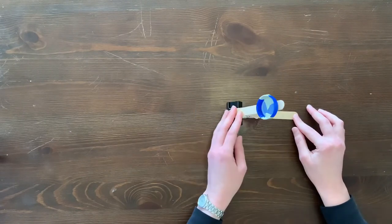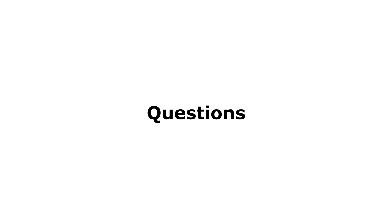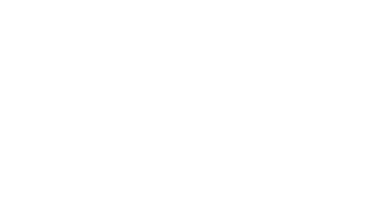A projectile is an object thrown by the exertion of a force. Now, I have a couple of questions for you to think about as you experiment with your catapult. Question one, how does the length of the lever affect the distance of the launch? And what about this one here for question two? How can you make your catapult launch farther?